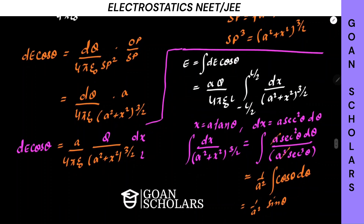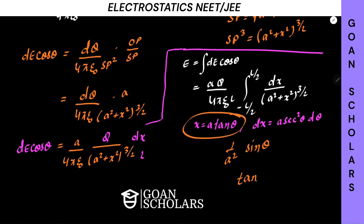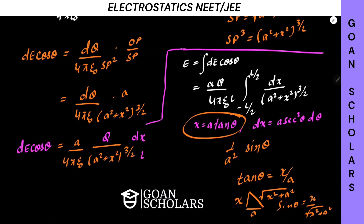The integral gives us (1/A²) sin θ. Since tan θ = x/A, the perpendicular is x and base is A, so the hypotenuse is √(x² + A²). Therefore sin θ = x/√(x² + A²). Substituting this back, our integral result becomes (1/A²) times x/√(x² + A²).